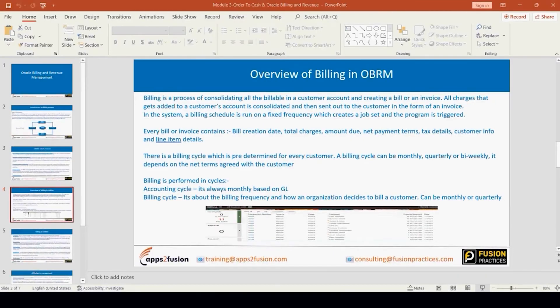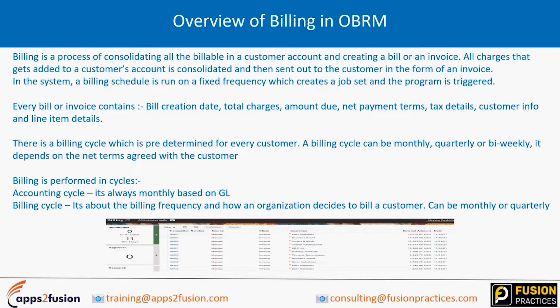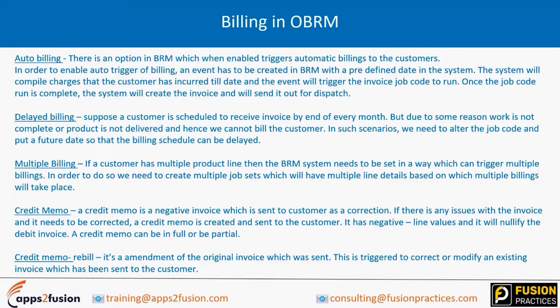In the backend, the system has two types of cycles: an accounting cycle and a billing cycle. The accounting cycle hits the GL books of account, while the billing cycle is what we see on the front screen showing the billing frequency for that customer. The accounting cycle is always monthly because we cannot break it by days or weeks — whatever the billing cycle for a particular customer, in the books of account it is always recorded monthly.